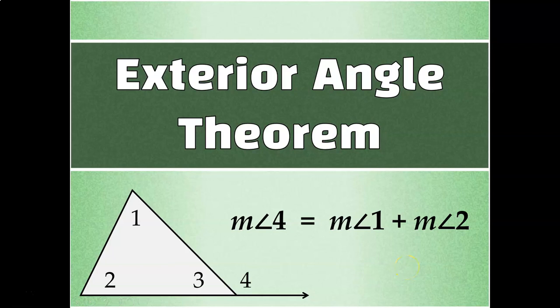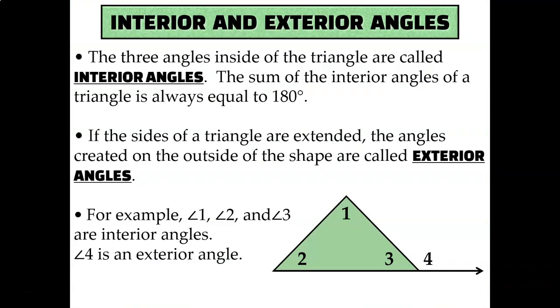Let's talk about how to calculate the exterior angle measures of a triangle using the exterior angle theorem. Hopefully you remember from our previous video that we discussed how to calculate the interior angle measures. The interior angles are the ones on the inside of the shape like angles 1, 2, and 3 on this diagram.